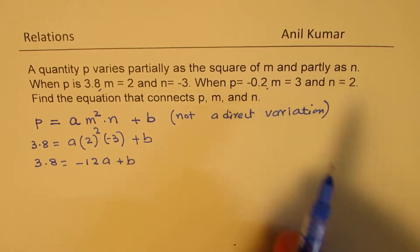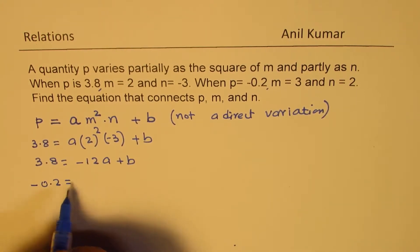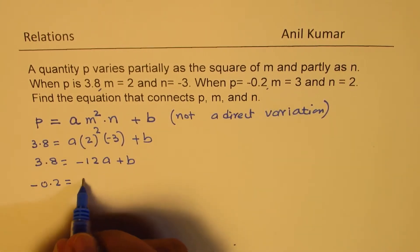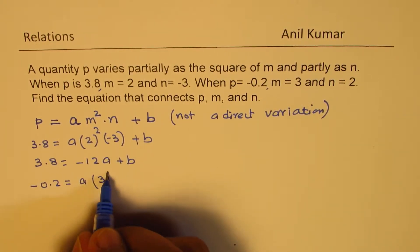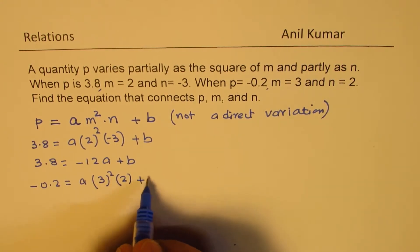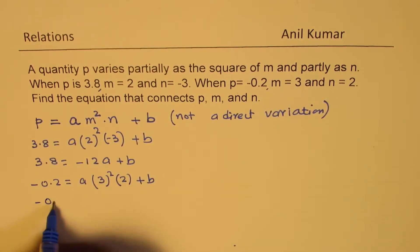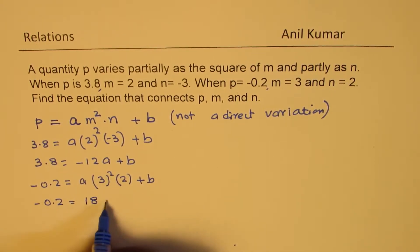Now the other equation we get using the second set of points, so P is minus 0.2, so we have minus 0.2 equals to A times, M is 3 this time, so 3 squared, N is 2, plus B. So that gives us minus 0.2 equals to 9 times 2 is 18A plus B.